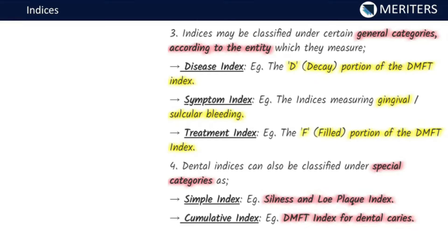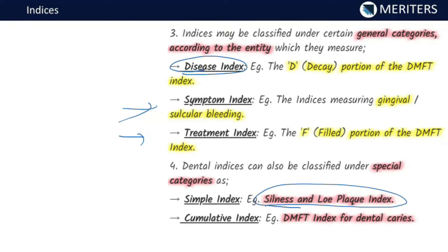Indices can also be classified under general categories according to what they measure: they can measure disease — for example the D component of the DMFT index; they can measure symptoms — for example the gingival bleeding index; or they can measure treatment — for example the F (filled) component of the DMFT index. Under special categories, a simple index measures only one value, like the plaque index by Silness and Löe, while a cumulative index measures multiple values, like decayed, missing, and filled teeth for dental caries.